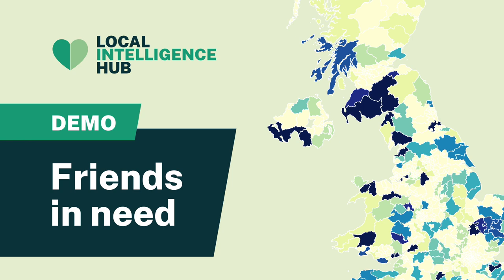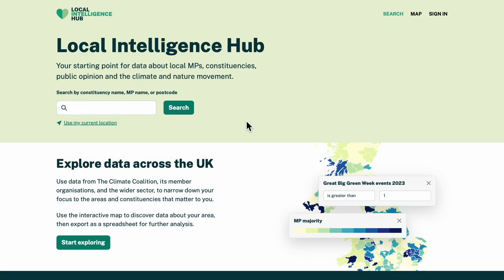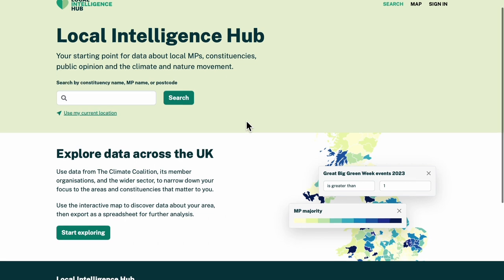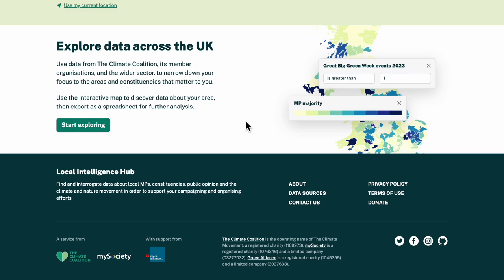Let's say I wanted to work with Friends of the Earth on a campaign around how solutions for climate change and the cost of living crisis need to work hand in hand. How could I use the Local Intelligence Hub to identify the parliamentary constituencies best suited for that message?